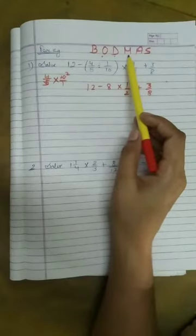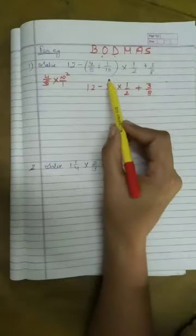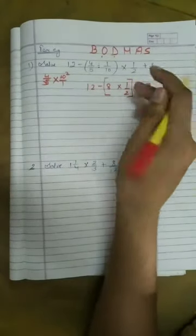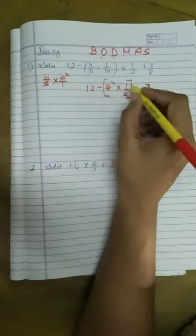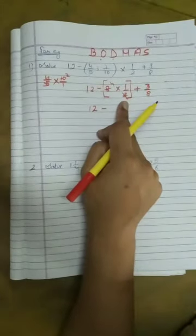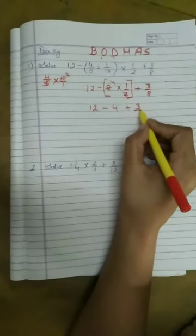And our fourth step is multiplication. So we do multiplication. The multiply term is 8 into 1 by 2. Now we solve this term. 2 into 4 is 8, this becomes 4. Now our remaining expression is 12 minus, what we solved from multiplication, we have 4.